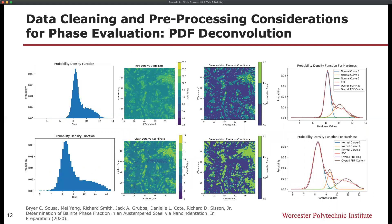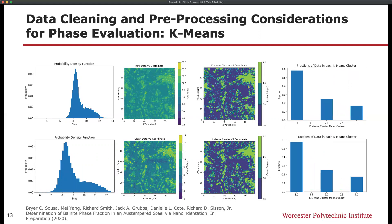Furthermore, when we apply data cleaning and preprocessing such that outliers are removed and filled in according to their nearest neighbors, and histogram extreme values within the probability density function histograms are removed, the resultant k-means clustering and probability density function deconvolutions are refined further, bringing the values even closer to the XRD-derived amount of bainite present.